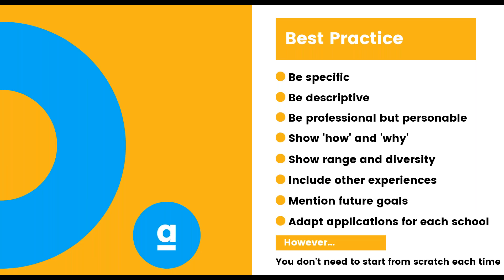What all that boils down to in terms of best practice is that in our overall response we want to make sure that we are specific. We want to make sure that we're descriptive so we can almost paint a picture of a situation. We want to be professional in our writing but also personable. We want to show how and why — there's a writing technique we'll talk about shortly which will help with that. As mentioned, avoiding the grocery list: we don't want to hint at an experience and then move on straight away. Actually stopping and thinking about how I did that, why I did that, or what the result was will help us to flesh things out in more detail. We want to show range and diversity.